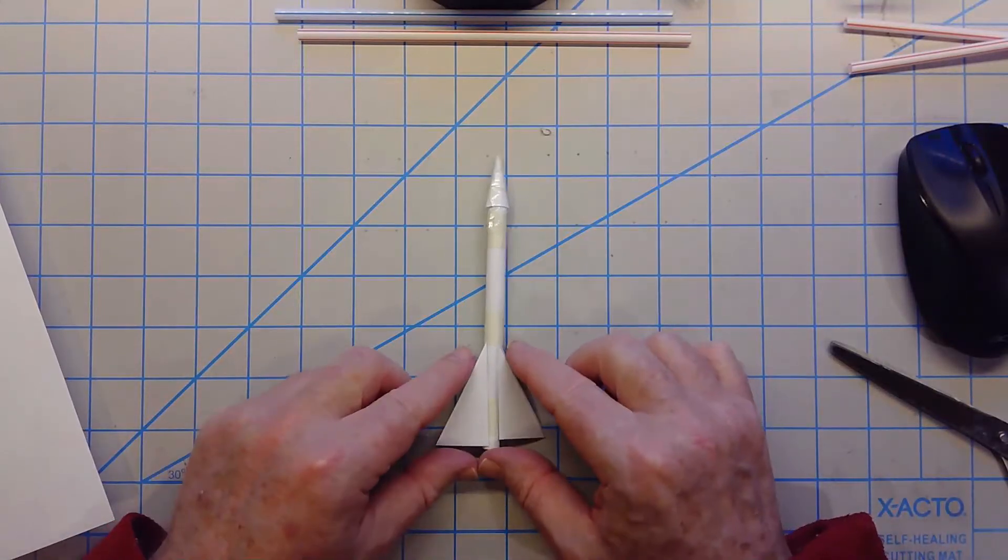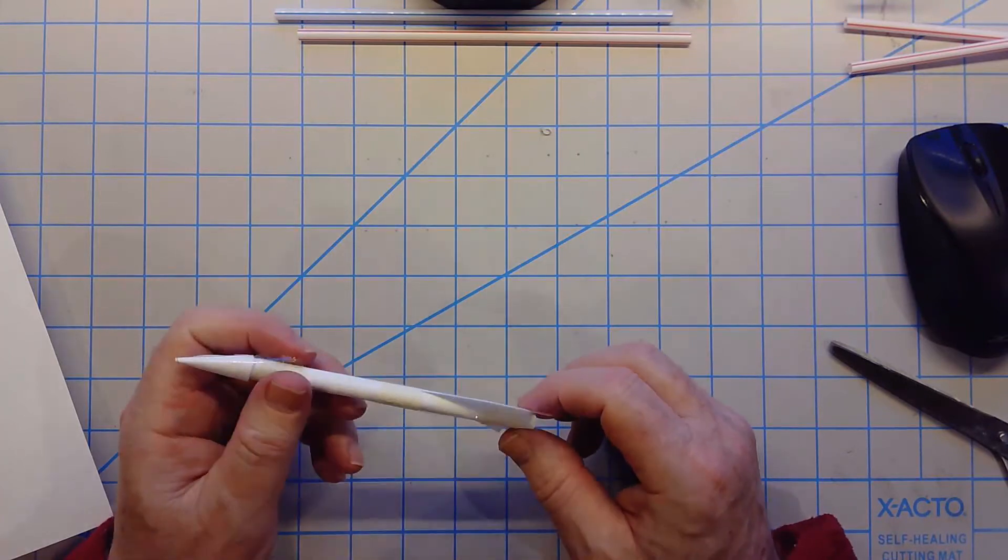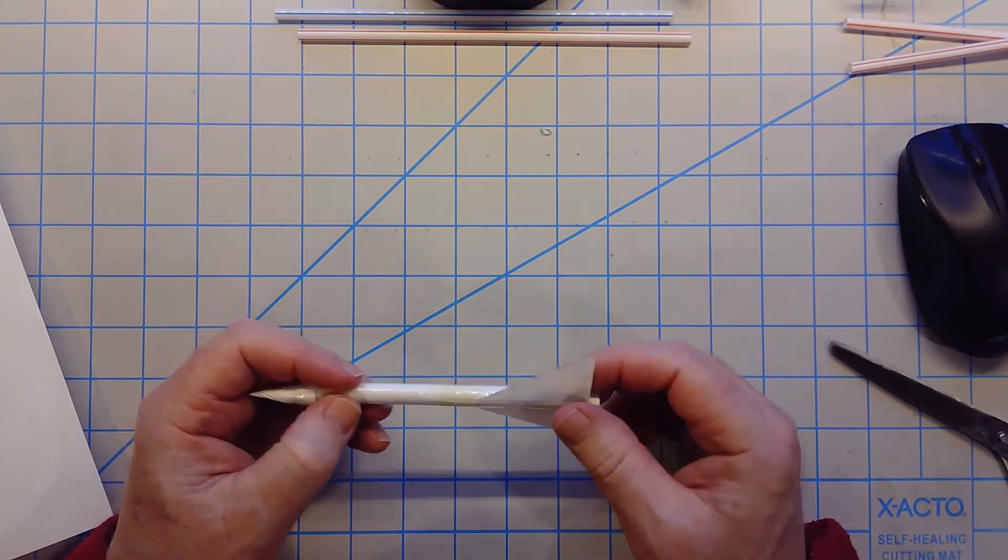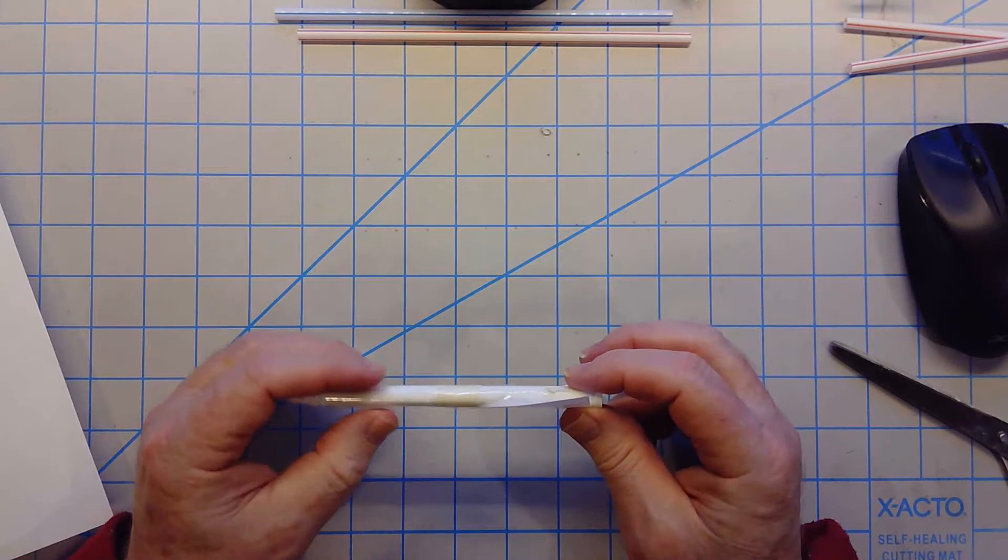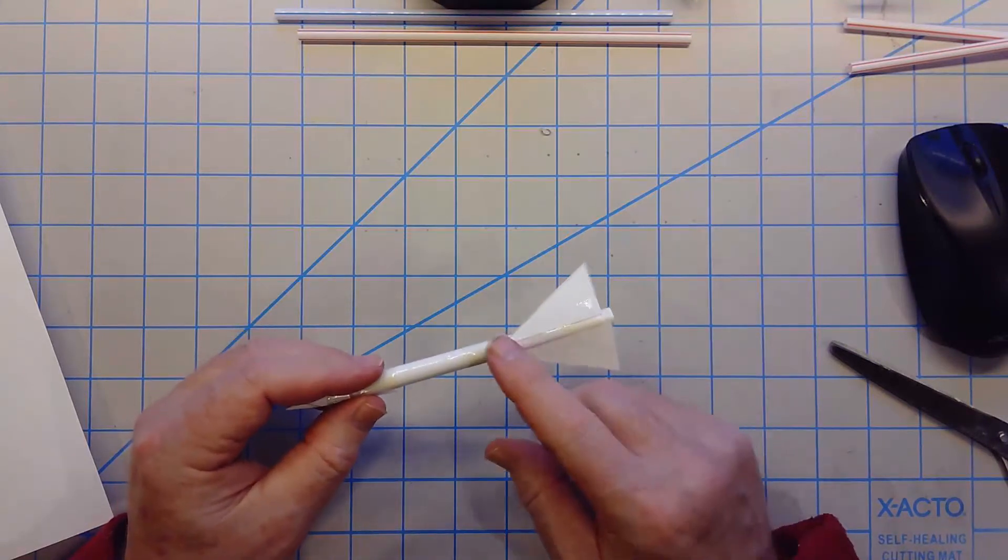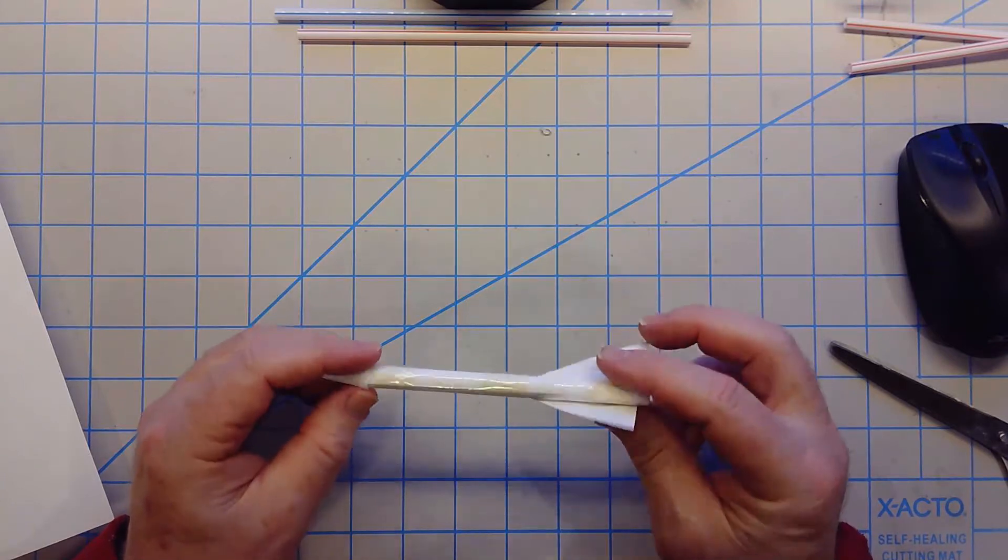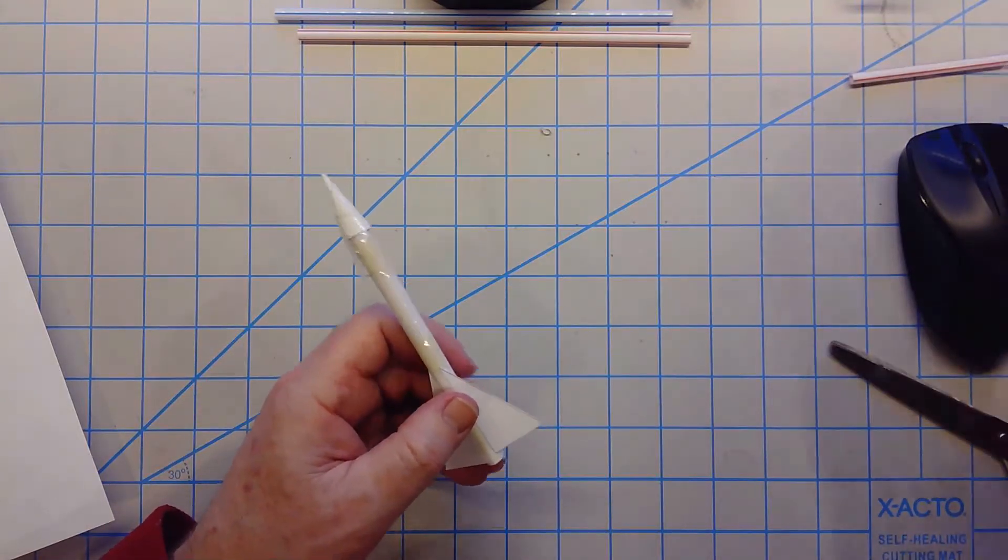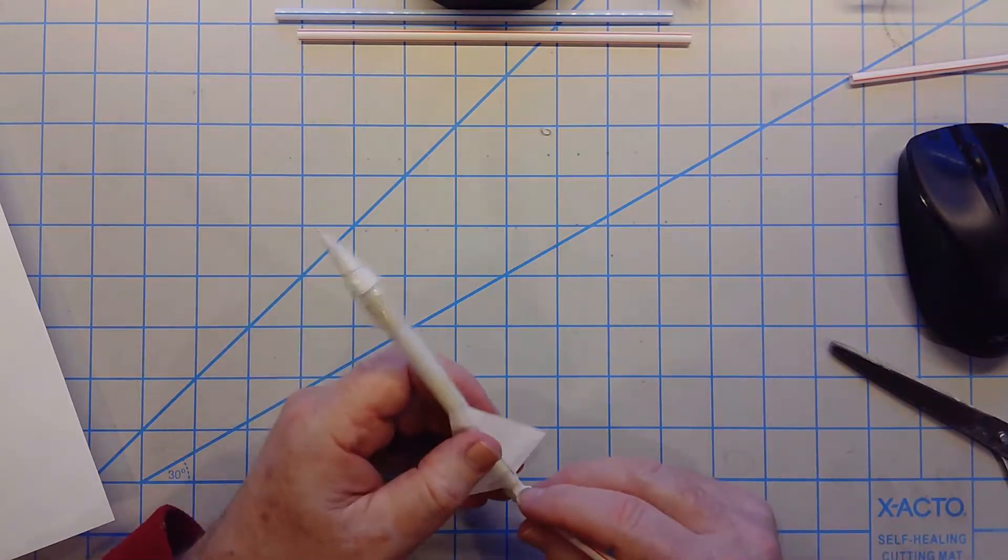Hey everyone, we are going to make this pencil rocket. It's called a pencil rocket not because you use a pencil to launch it, it's because you use a pencil to wrap the paper around it to make the shaft of the rocket.